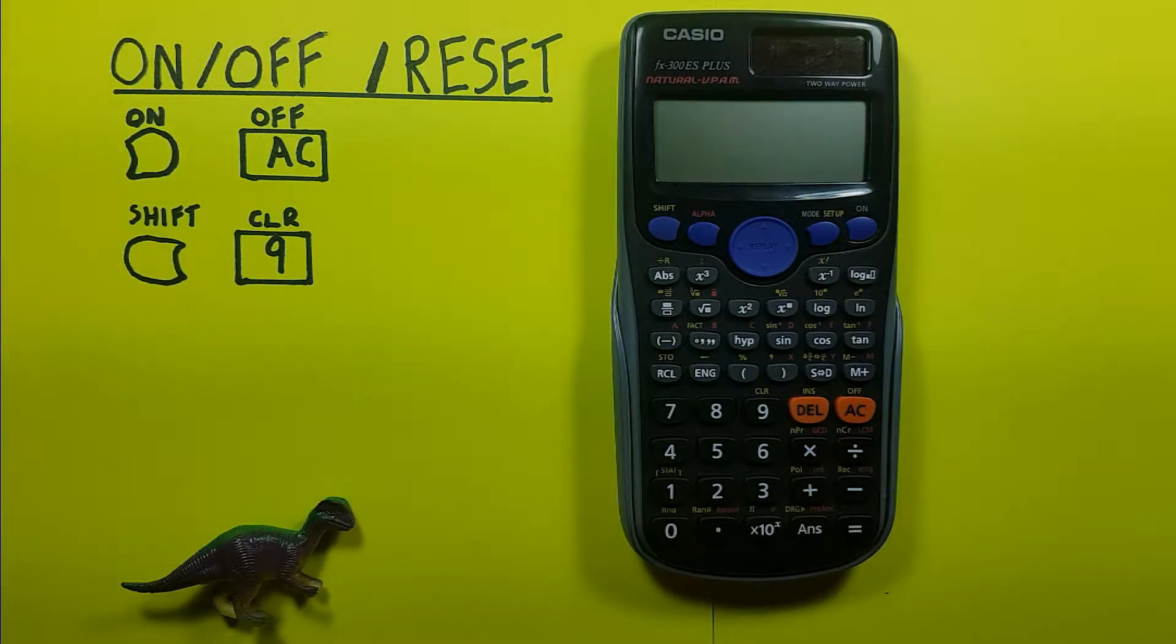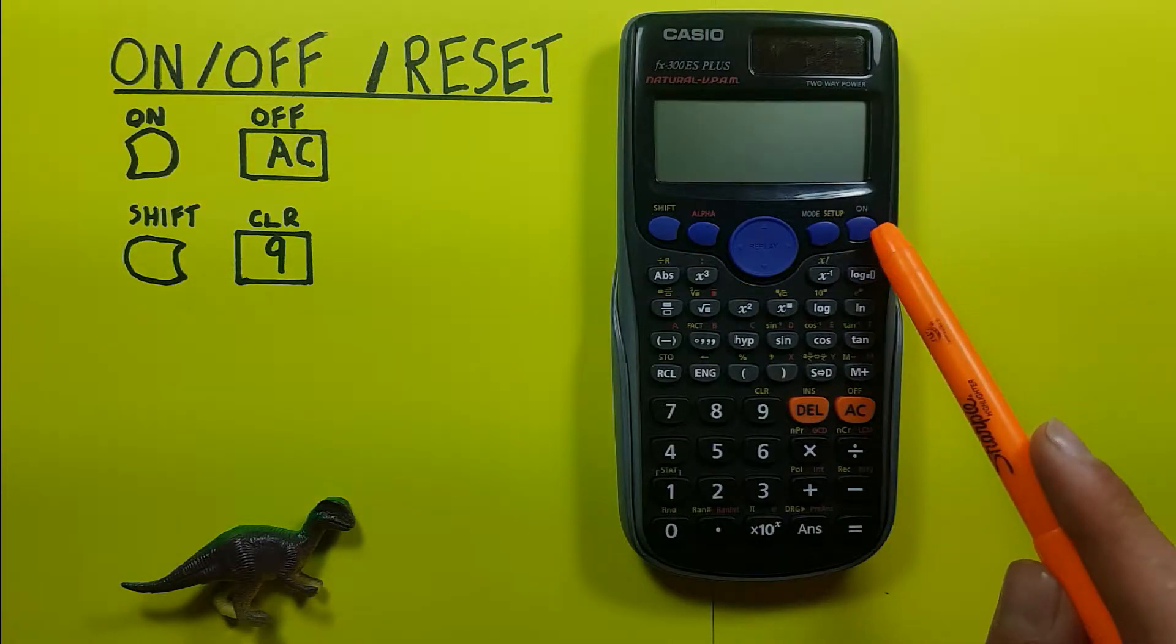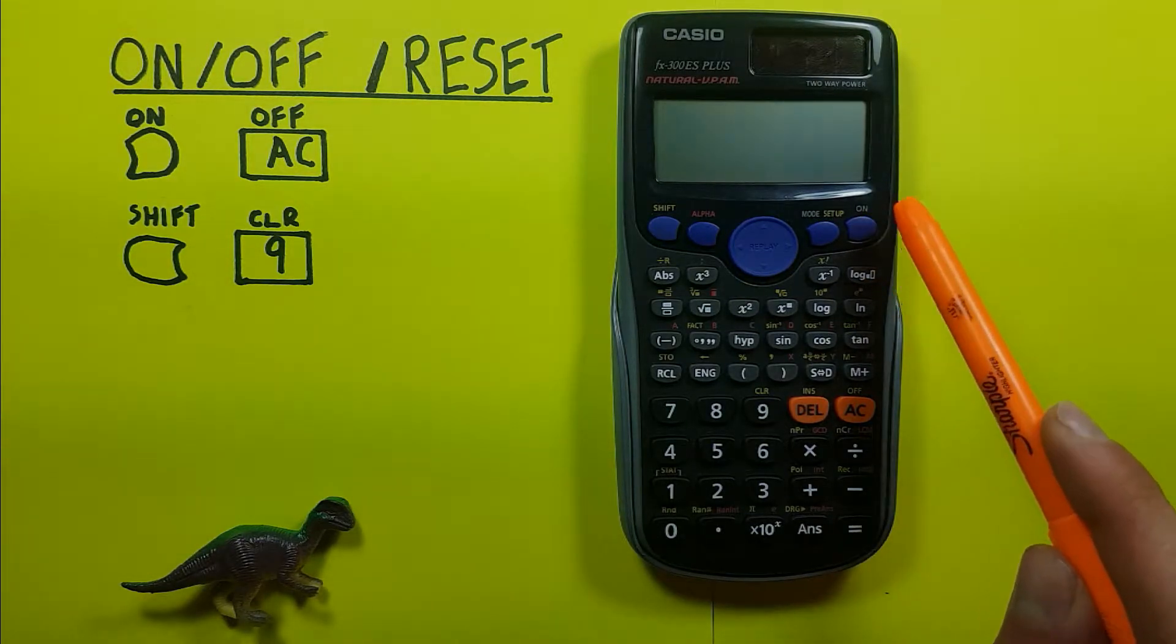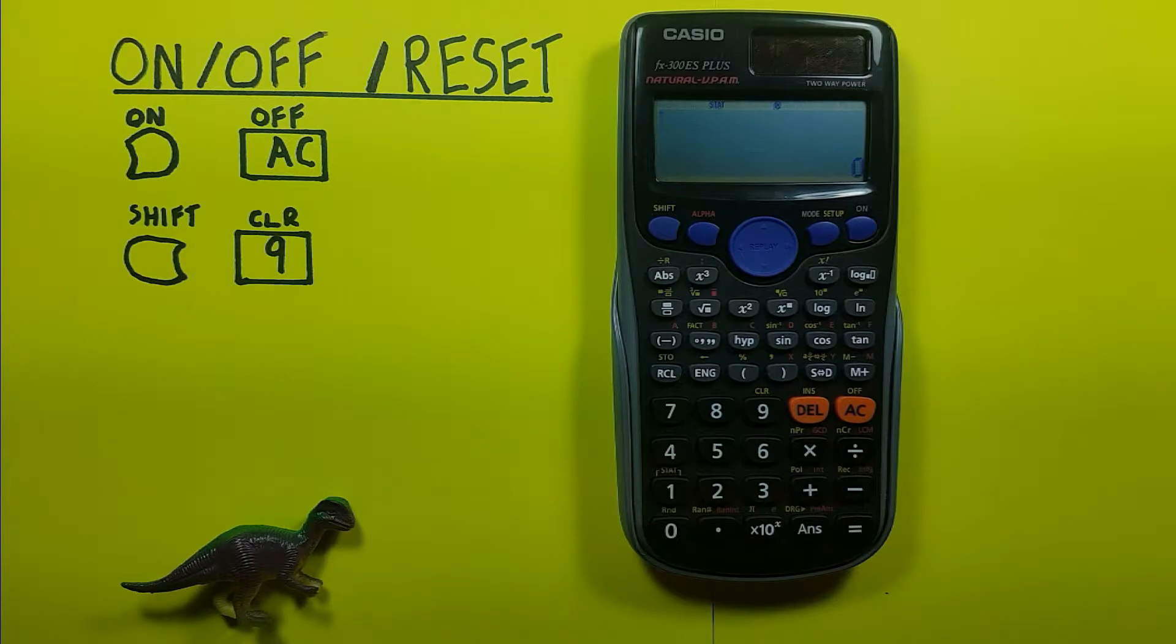First and foremost, we want to turn our calculator on. We can hit the on key which is located here in the upper right hand corner, hit that, and our calculator is now on.